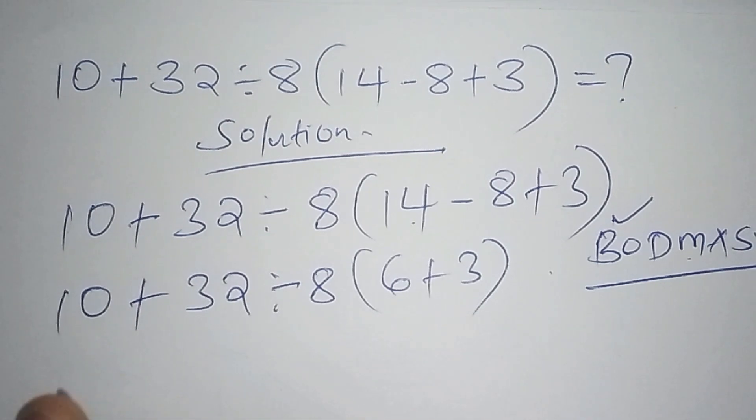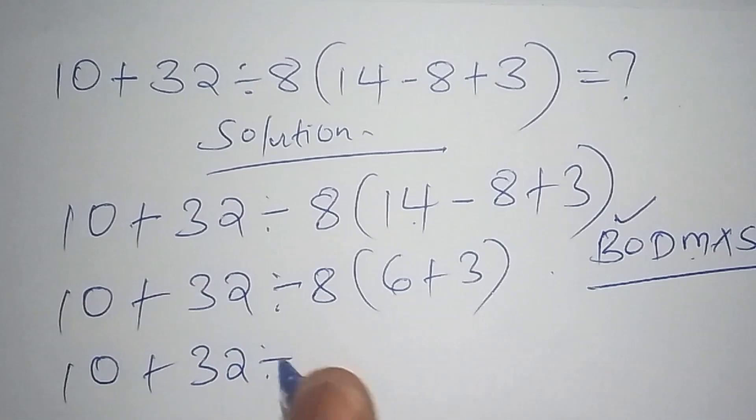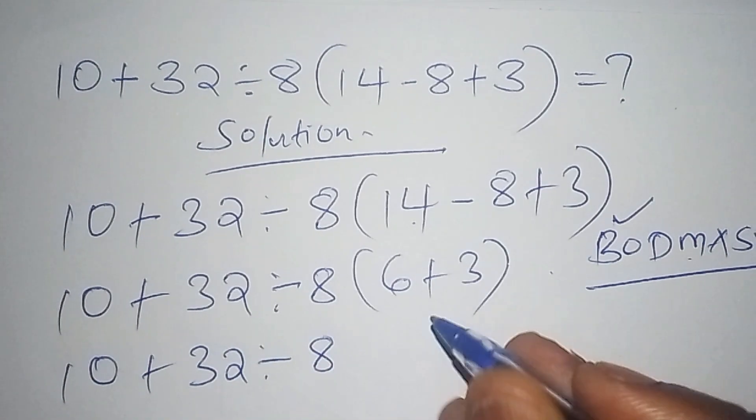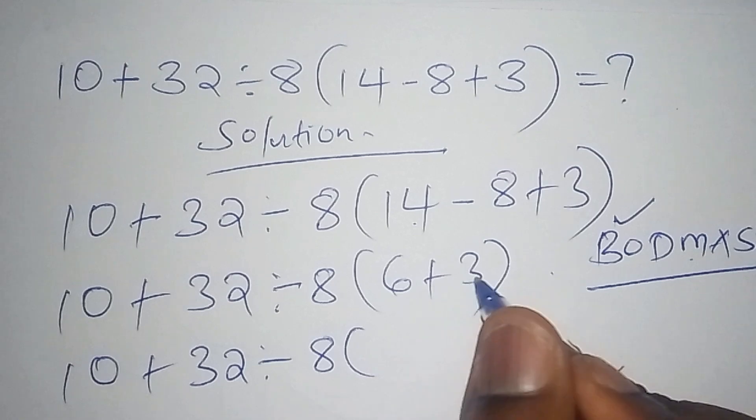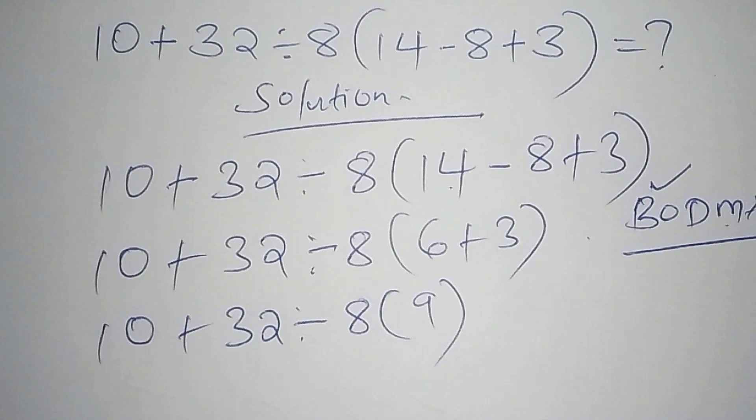So the next step we still want to work out the one inside the bracket because we are not done. So we have 10 plus 32 divide by 8. Then from there into bracket, this one is 6 plus 3 is 9. So the number is now inside the bracket. So let us now do it away.